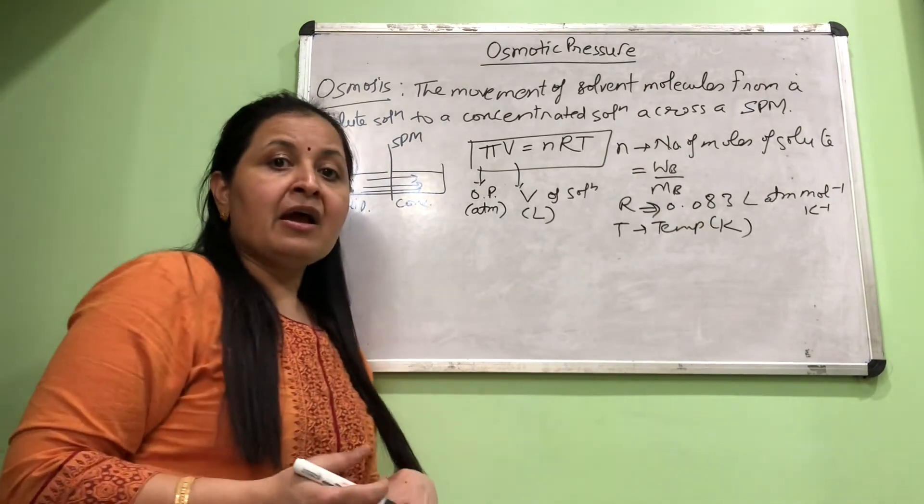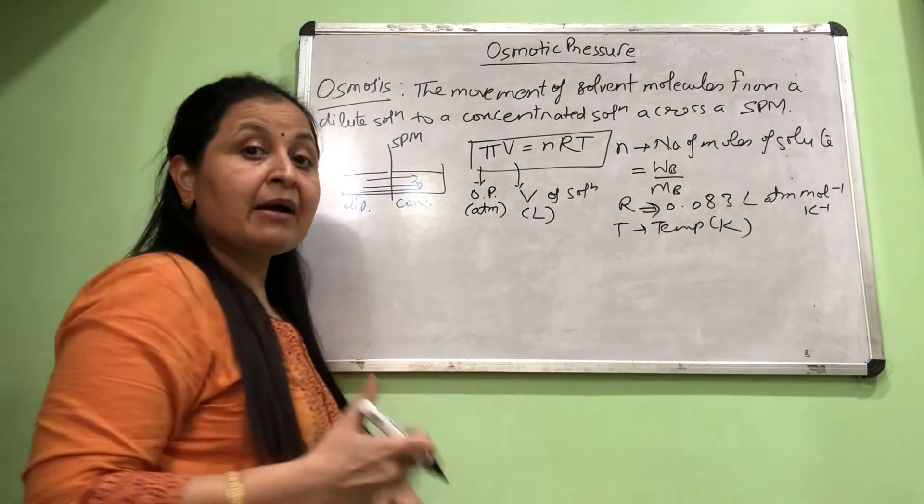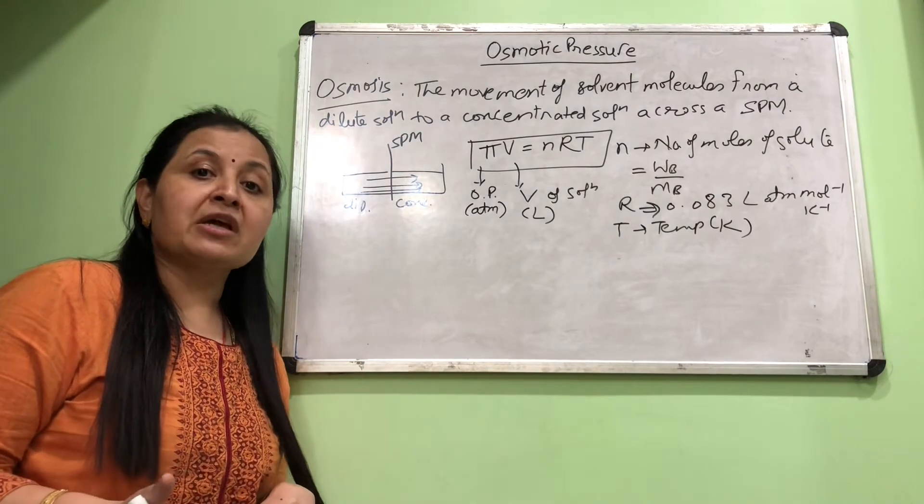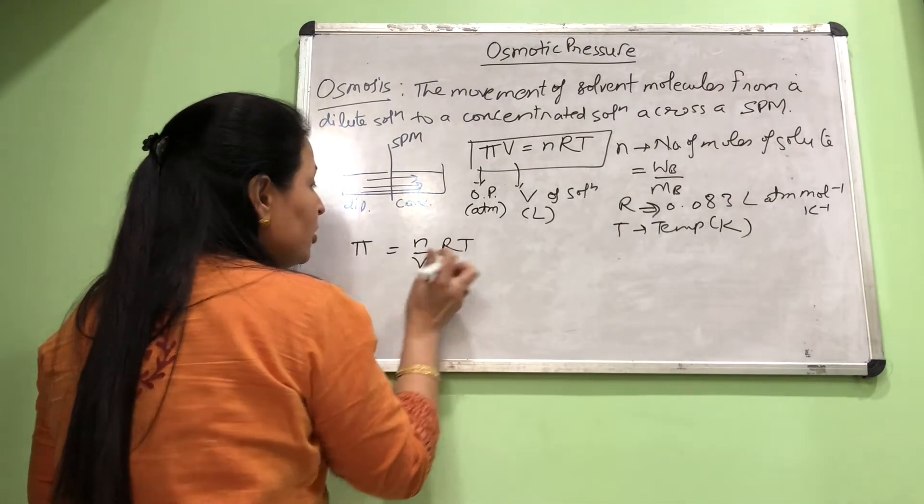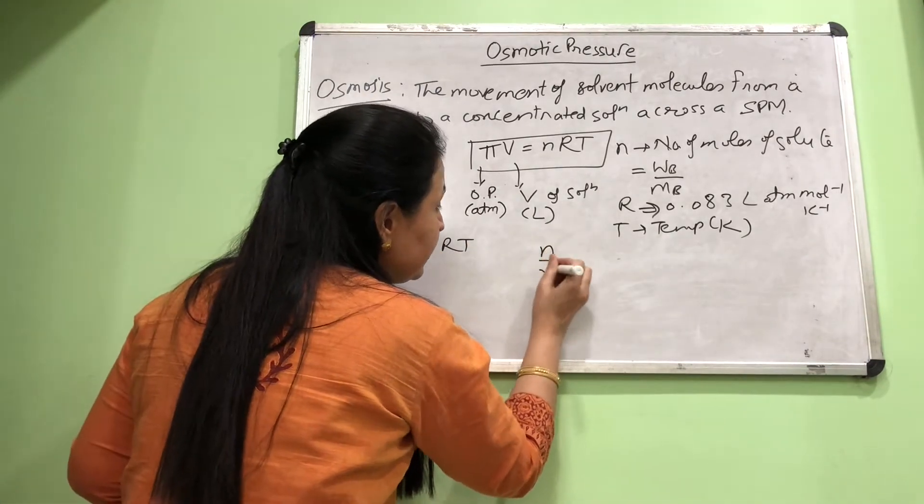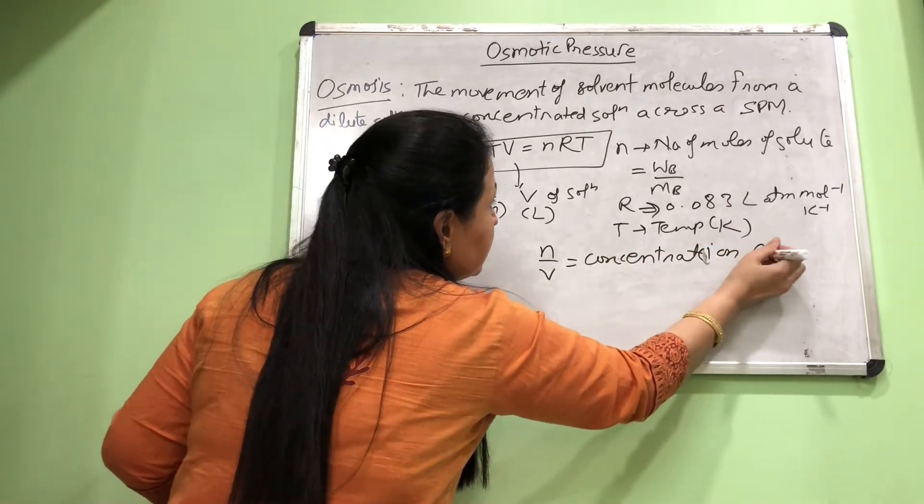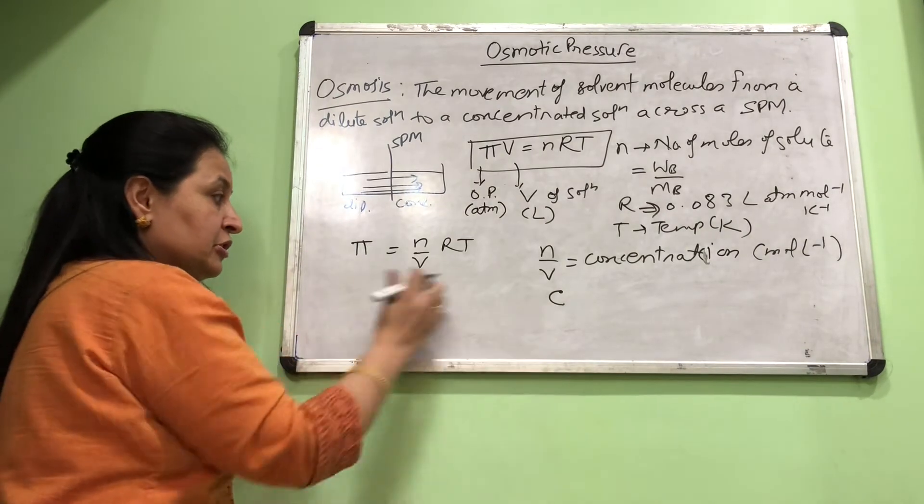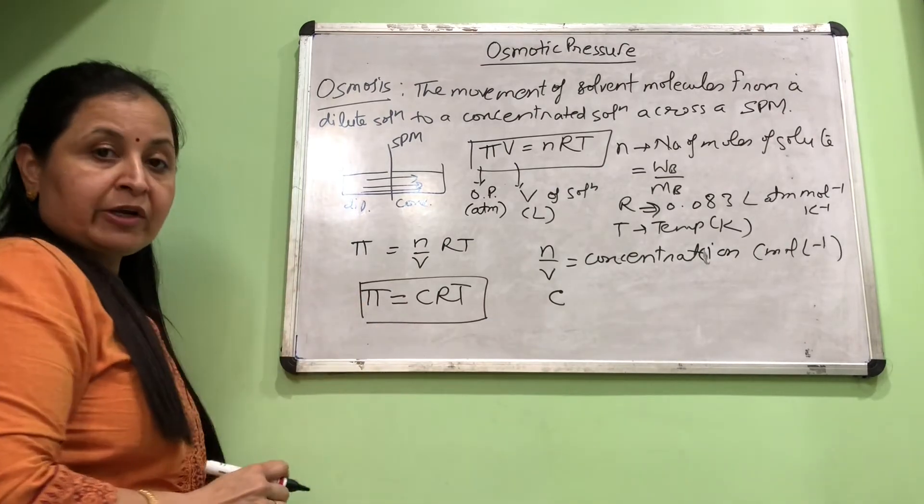After substituting these values, we do the calculations. Finally, you can write another formula. When you replace n with w_B/M_B, this is used when we need to calculate molar mass of solute using this colligative property. Another way to write the same formula is π = (n/V)RT. Now n/V is moles of solute divided by volume of solution in liters, which is nothing but the concentration of the solution in units of moles per liter. Sometimes we write this as C, where C is the concentration. So another formula you'll see in some books is π = CRT.